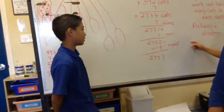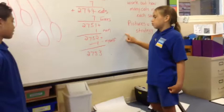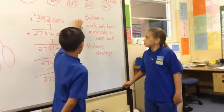And then we forgot to add the man and ourselves, so we ended up with 2753. And the strategy we used was pictures, which helped us work out our system.